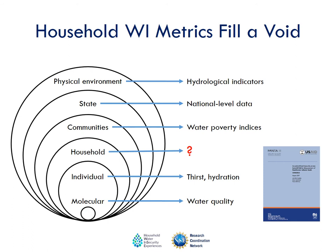There are lots of indicators out there. A simple Google search using a term like water security indicators or metrics would reveal hydrological indicators about how much water may be available in a river basin, national level data on water balance, water poverty indices published by some NGOs and district authorities, and a great deal of work from public health looking at individual and molecular scale water, hydration, and water-health relationships.